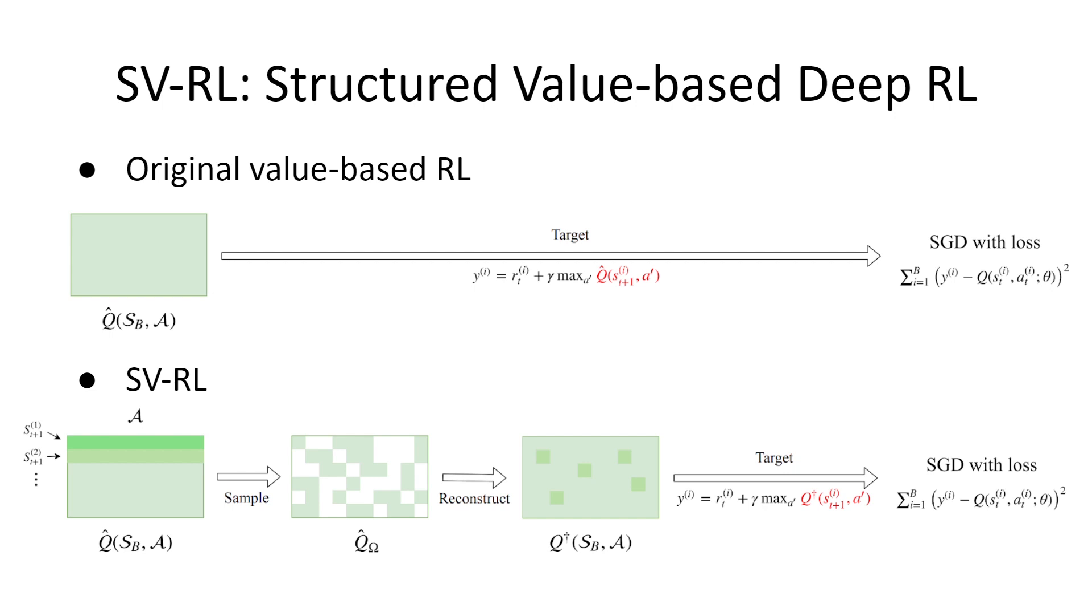Following our previous success, we leveraged ME to harness the structure within the batch of states. Instead of directly using the original Q matrix, we added an additional component. As highlighted in the red box, at each update step, a subsampled matrix is produced from the original Q hat, which is then being reconstructed via ME to give a new matrix Q dagger. Finally, this reconstructed Q dagger replaces the original Q hat to produce the targets Y. The same SGD step is then carried to update the parameters. Obviously, except the common model update step, SVRL doesn't modify any method-specific details. This is why it can be more broadly applied to many value-based deep RL methods.